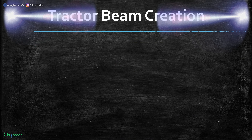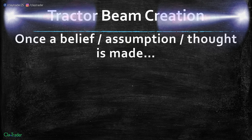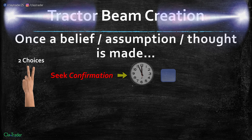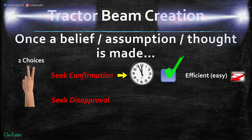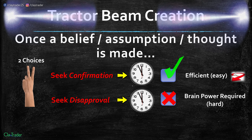How is the tractor beam created more specifically? Once a belief, assumption, or thought is made, there are really two choices you have moving forward — and this is not just for trading, this is for anything in life. First, you can seek confirmation, which from a time perspective is very efficient and easy. Or there is another choice: seek out disapproval. But that's not very time efficient — a lot of brain power is required, and that becomes a whole lot more difficult.